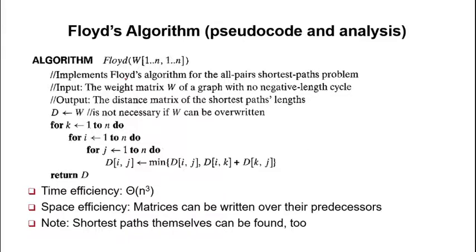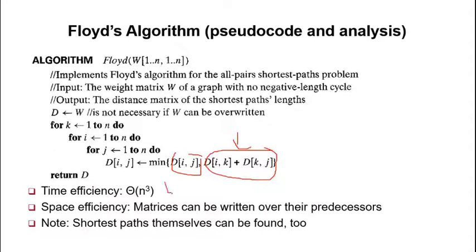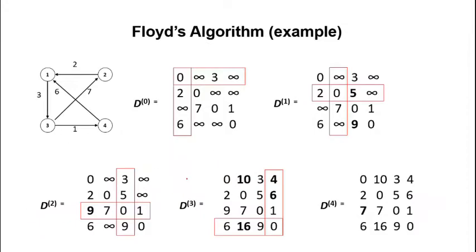If you look at the Floyd diagram, it is basically the same thing. The main difference is that Floyd considers the distance D[i,j] and the sum of two distances through an intermediate. Find the minimum of those. The time complexity is of course O(n³), the same as Warshall.